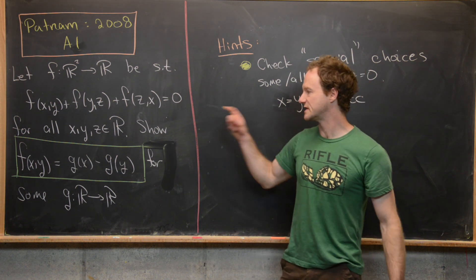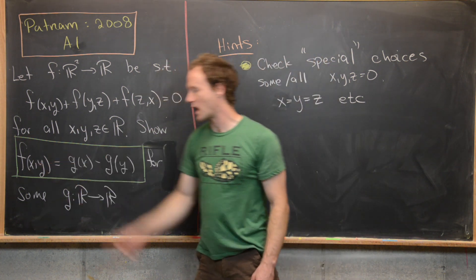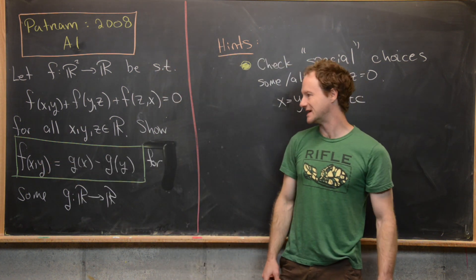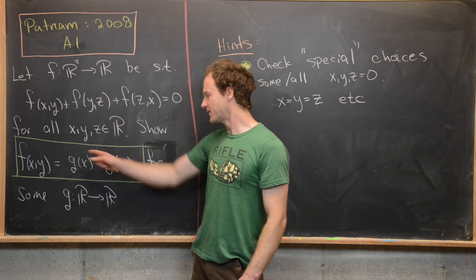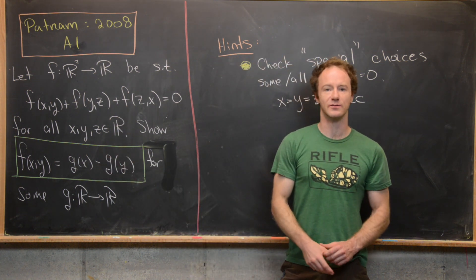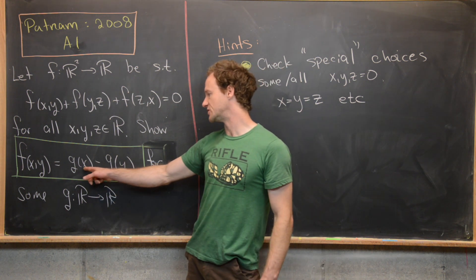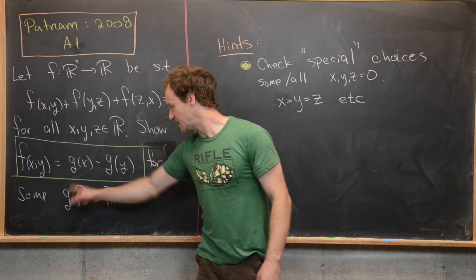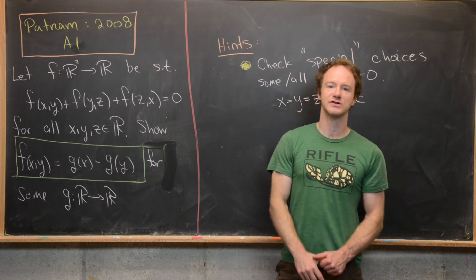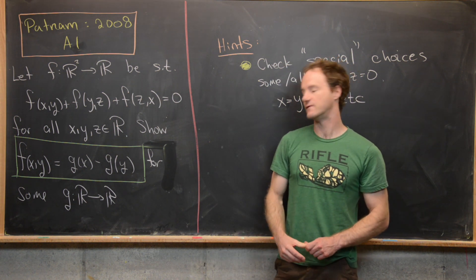Then from that, our goal is to show that f(xy), this function of two variables, is in fact the difference of a function of one variable evaluated at x and y. So in other words, it looks like g(x) - g(y) for some g, which is a function from R to R, in other words a function of one variable.